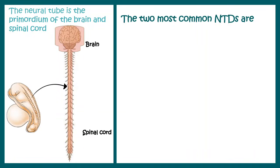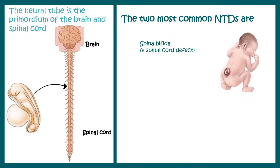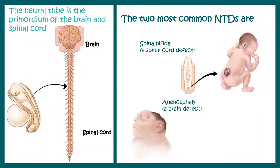The two most common forms of neural tube defects are spina bifida, which is a defect in the spinal cord that happens when the posterior or caudal end of the neural tube doesn't close properly, and anencephaly, which is a brain defect that happens when the anterior or cranial half of the neural tube does not close properly. These are the two most common neural tube defects, and there are many others which we will review in this video.